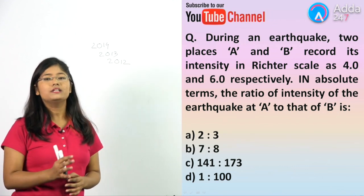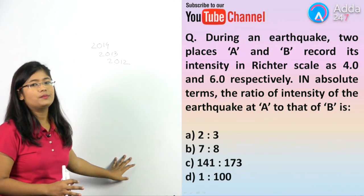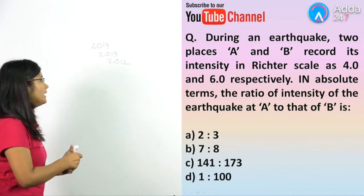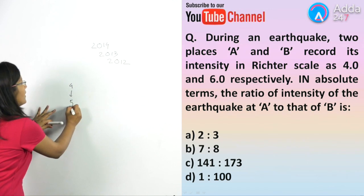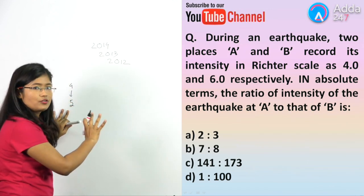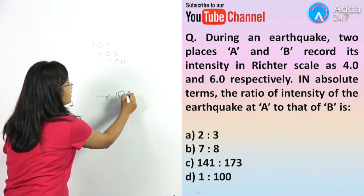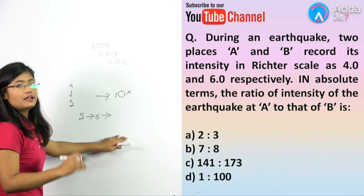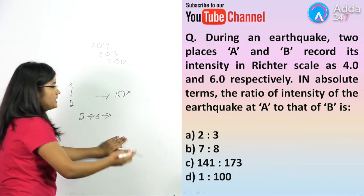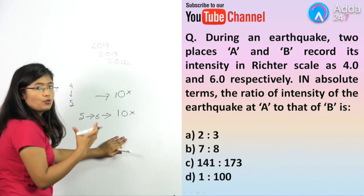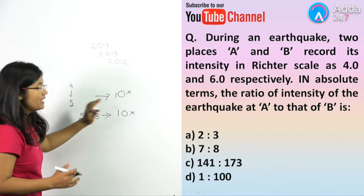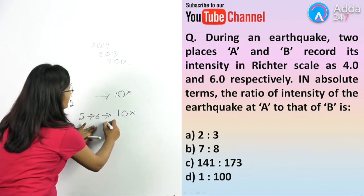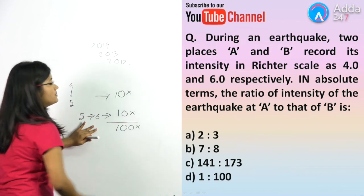This is also a geography question, but because NCERT has given it in the science chapter directly, let us discuss it in the science section. Now, on the Richter scale, from 4 to 5, the shaking is 10 times more. From 5 to 6, it is again 10 times more. So if we calculate from 4 to 6, it becomes 100 times more.